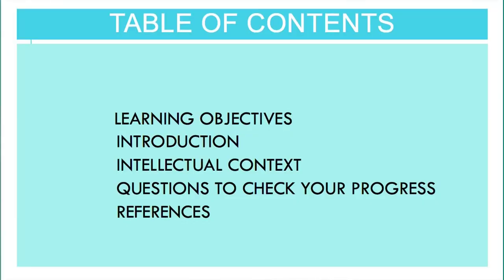Today I shall take up a unit from the program of MA English Semester 1, course titled English Social and Cultural History, Block 3, Literature: Medieval to Neoclassical. The name of the unit is the Neoclassical Age, Intellectual Context. I shall begin with a table of contents starting with the learning objectives, introduction, intellectual context, questions to check your progress, and the references.